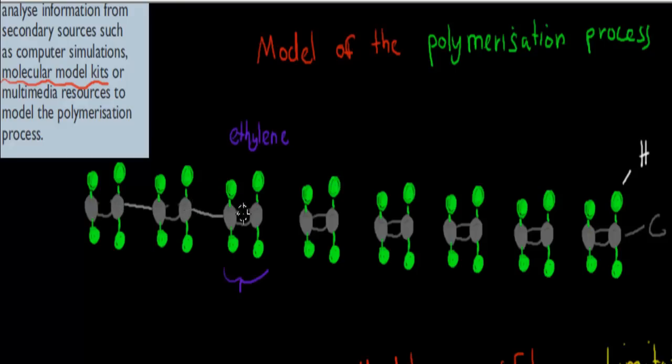And once we've broken them, we can attach them end by end. So break the double bonds. You would have done that with your molecular kit. And then attach them end by end, one after the other. And you would have had maybe 10 or so of these ethylene molecules.